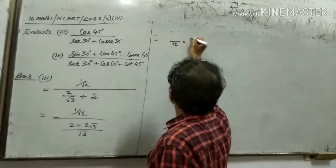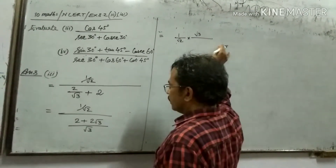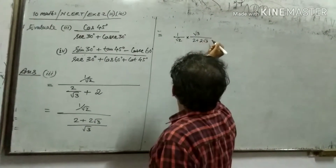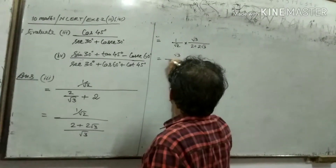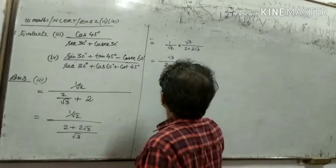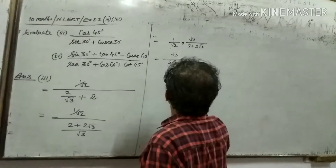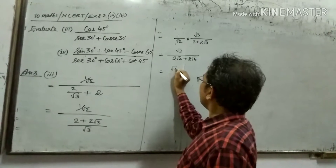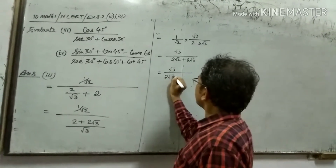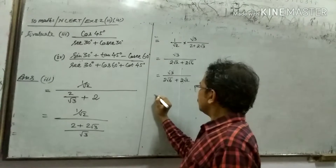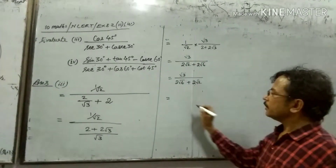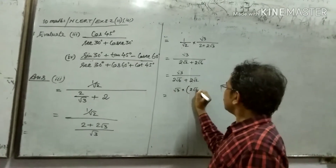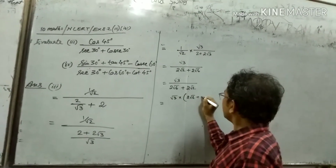Into root 3, divided by 2 plus 2 root 3. Root 3 is similar. 2 root 2 plus 2 root 6 — 1 by root 2, it is similar. Root 3. Root 3, root 2: root 6 plus 2 root 2. Plus minus is similar. Root 3, into 2 root 6 plus 2 root 2.